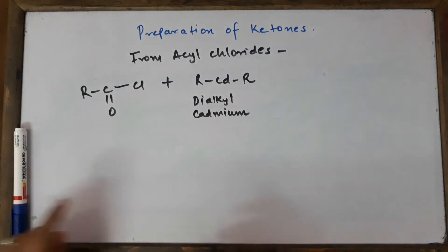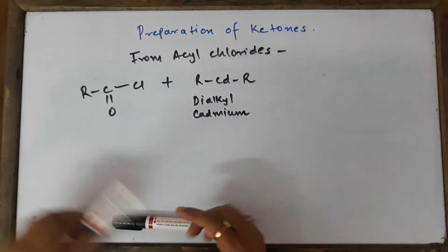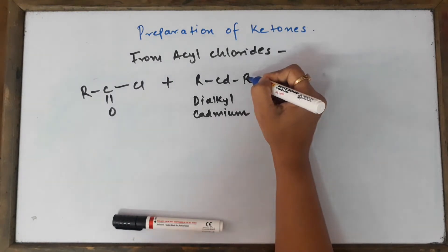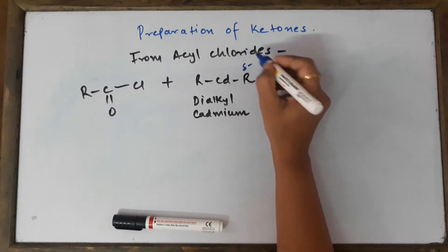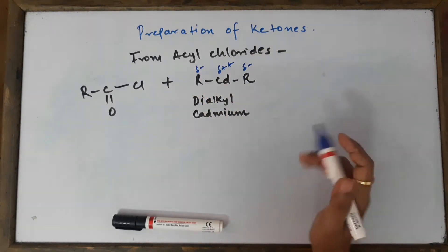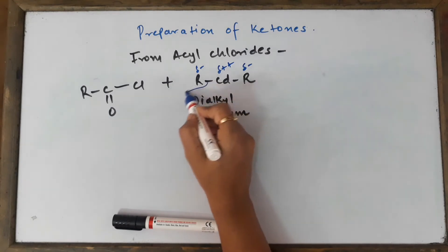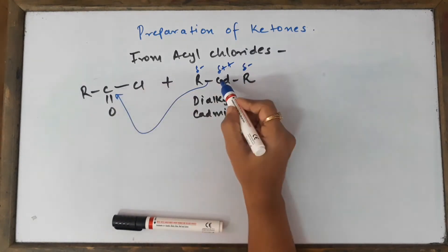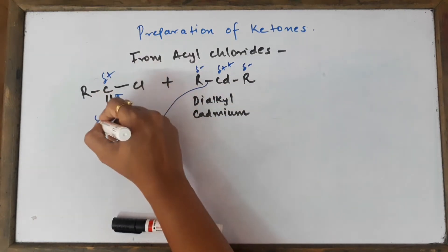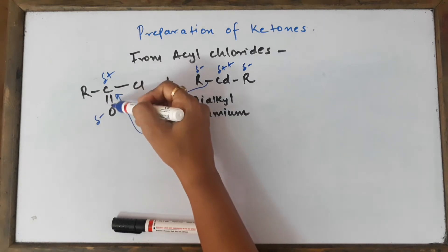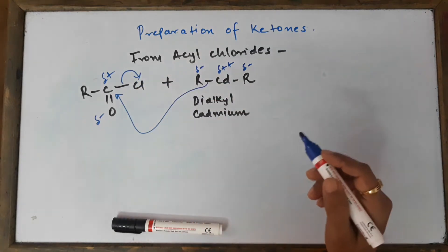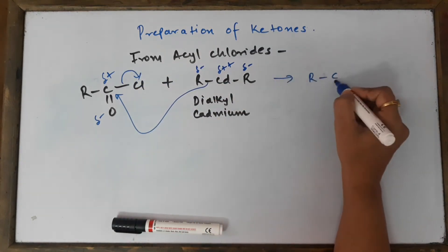Dialkyl cadmium — look at the formula and the name. Cadmium is a d-block element. Carbon is a non-metal, so we write R minus, cadmium is plus, and the other R is also minus. The attack takes place because the negative R minus attacks the positive carbon atom, and because of the electronegativity difference, the leaving group goes out as Cl minus, giving R-CO.